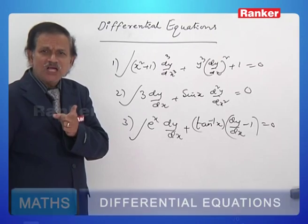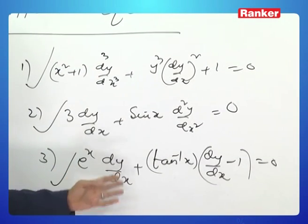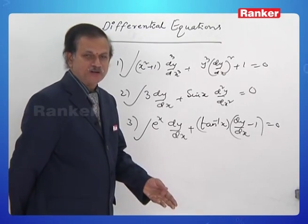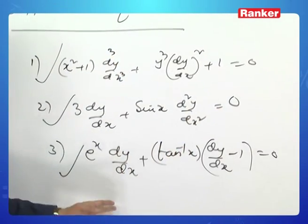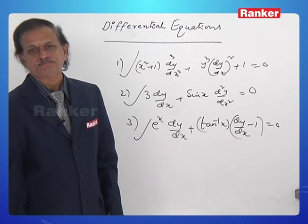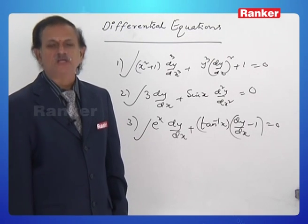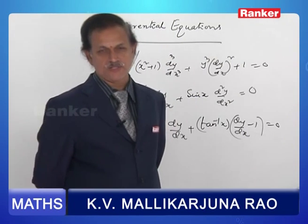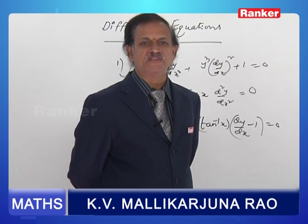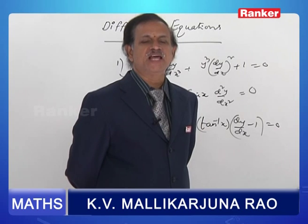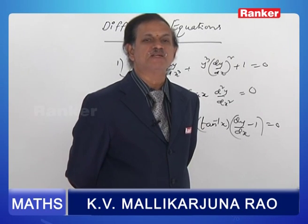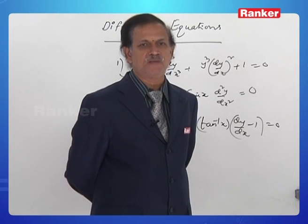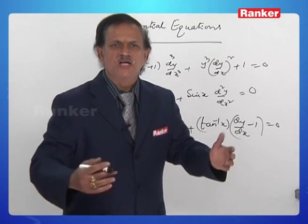Does the highest order derivative need to appear only once? No, that is not necessary. You can see dy by dx occurring two times in the first equation — we do not bother about that. What matters is the largest order of the differential coefficient present. Depending on this, we define the order of the equation: the first equation is of first order, the second is of second order, and the third is of third order. A differential equation is said to be of nth order if the largest ordered differential coefficient present in it is of nth order — that is, d power n y by dx power n is present but no differential coefficient of order n plus 1 appears.